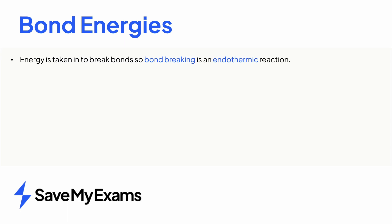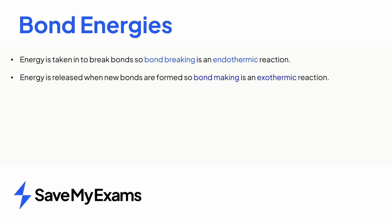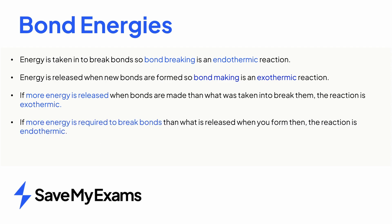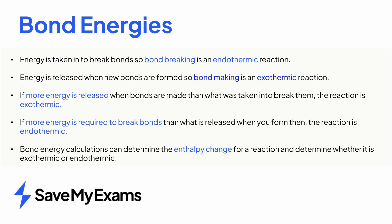To summarise: energy is taken in to break bonds between atoms in the reactant, so bond breaking is an endothermic process. When bonds are formed, energy is released, so bond making is an exothermic process. An exothermic reaction will occur if more energy is released when new bonds are formed than what was needed to break them. An endothermic reaction will occur if the energy taken in to break the bonds exceeds that released when new bonds are formed. Bond energies can be used to calculate the enthalpy change of a reaction, which can identify whether that reaction is exothermic or endothermic.